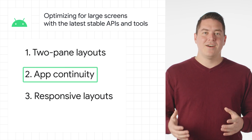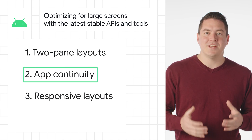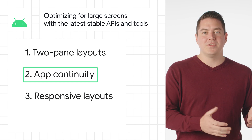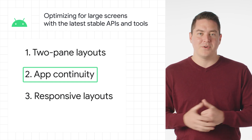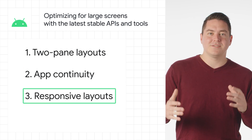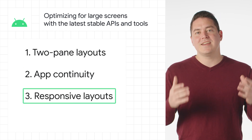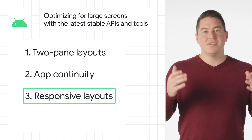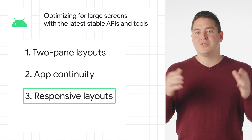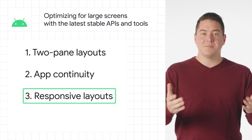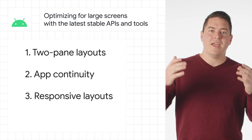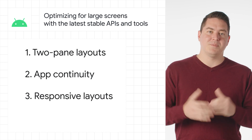App continuity on foldable phones ensures apps easily transition from folded to unfolded orientations. Responsive layouts resize content and controls when the screen size changes, such as when you use two apps in split-screen mode. You can learn more on the Android Developers blog.